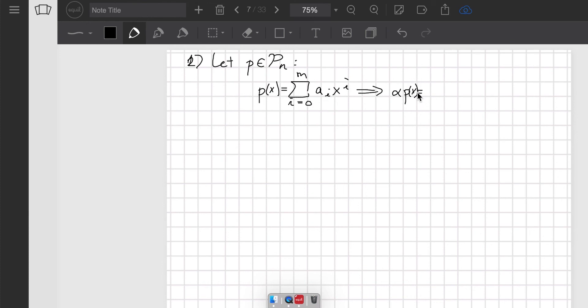Therefore alpha times p(x) is equal to alpha times the sum from 0 to m of a_i times x^i. This is a constant, so you can drag it into the sum. If I define this to be c_i, then clearly this is in the form of a polynomial, so alpha p belongs to P_n.